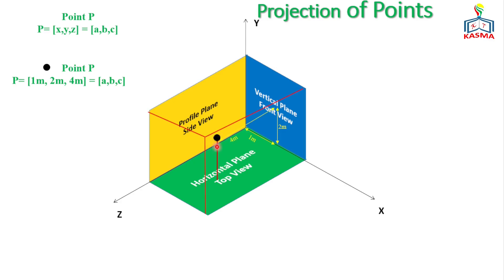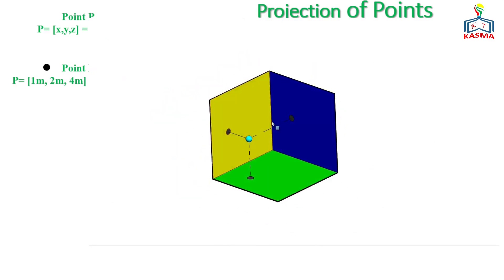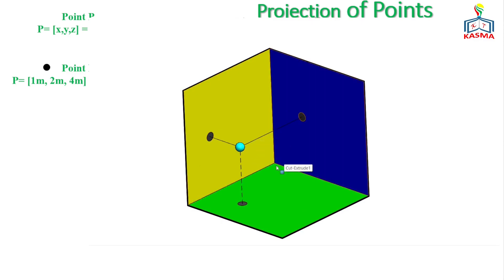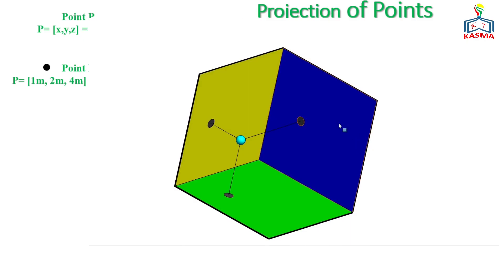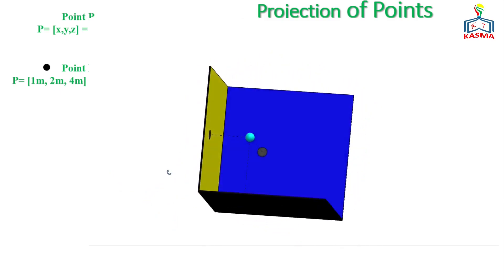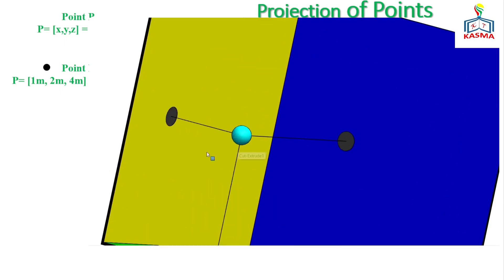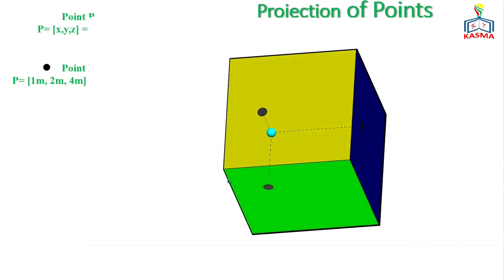To understand exactly where the point is located, I'll show you with a 3D modeling technique. Here is the point shown on the three axes. This is the horizontal plane, this is the vertical plane, and this is the profile plane. The point is placed 1 meter from the vertical plane, 4 meters from the profile plane, and 2 meters from the horizontal plane — that is the exact location of the point.